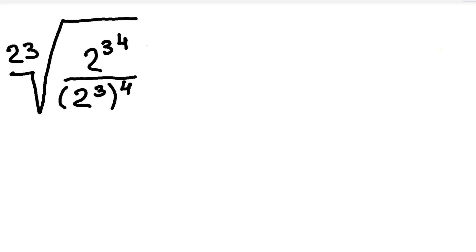Hello everybody. In this video we're going to go over how to solve the problem on the screen. The problem is the 23rd root of 2 to the power of 3 to the power of 4, over 2 to the power of 3 in parentheses to the power of 4. So how do we solve this? First, we have to work from the inside.